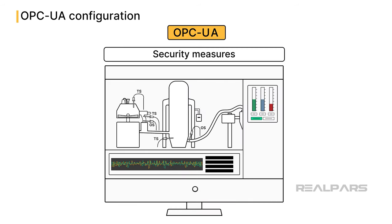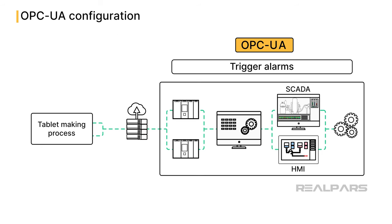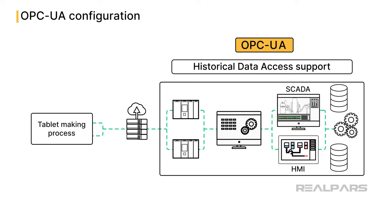Third, for operational support, OPC UA is set up to trigger alarms when data from sensors breach predetermined thresholds. This helps ensure timely intervention by operators. Finally, OPC UA provides extensive historical data access support. OPC UA is used in the process data archive tasks, which is crucial for batch traceability, especially in the event of product recalls.